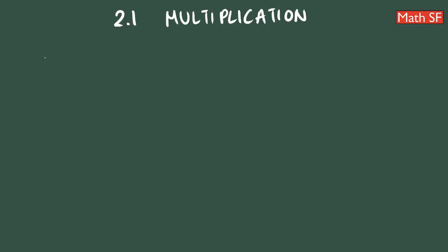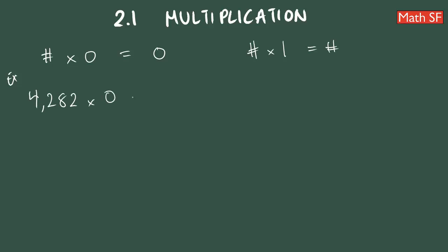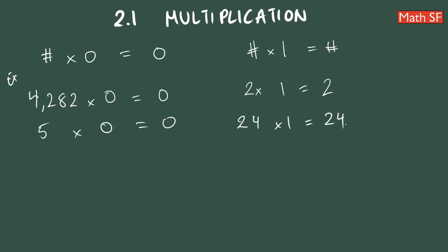In addition, we need to understand that any number times 0 gives you a product of 0, and any number times 1 gives you that same number. For example, 4282 times 0 is 0; 2 times 1 is 2; 5 times 0 is 0; and 24 times 1 is 24.